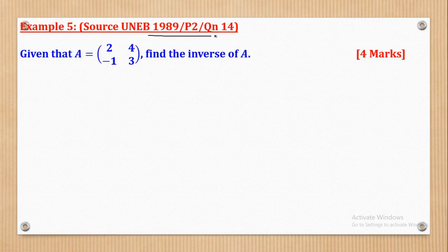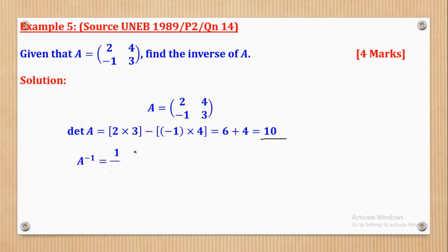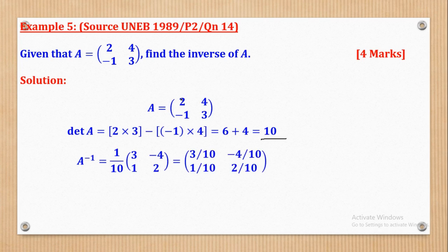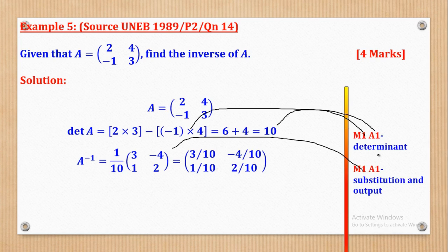Example 5 came from UNEB 1989, paper 2, question 14. Given matrix A = [2, 4, -1, 3], find the inverse of A. The determinant: 2 times 3 is 6, then negative 1 times 4 gives negative 4, but with the two negatives giving a positive, the determinant is 10. The inverse is 1 over 10 multiplied by the adjoint: where there was 2 we put 3, where there was 3 we put 2; 4 was positive so it becomes negative 4; negative 1 becomes positive 1. Applying the scalar gives the inverse. M1 for determinant, A1 for output, M1 for adjoint, A1 for inverse.